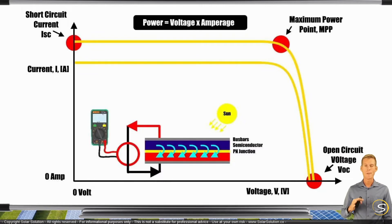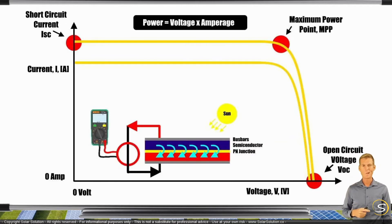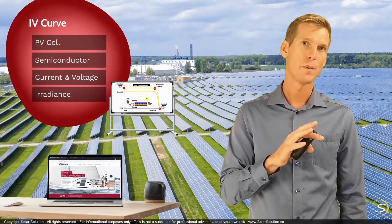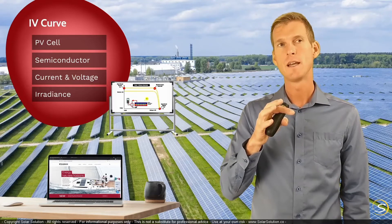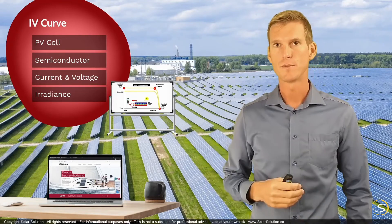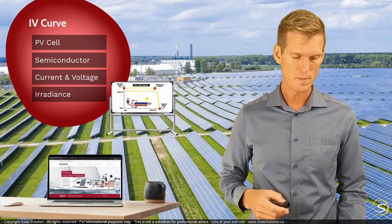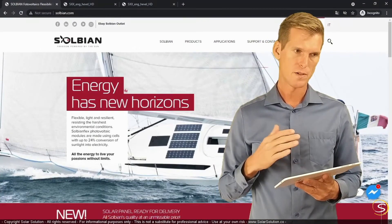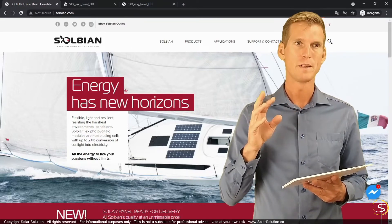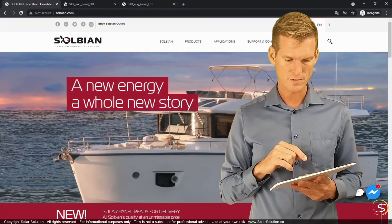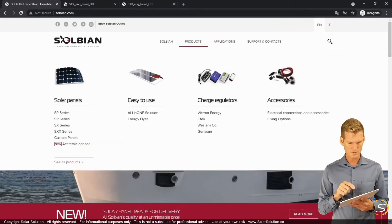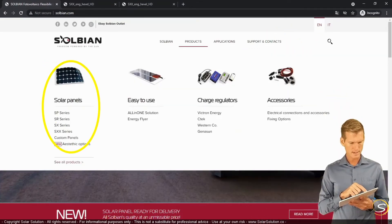That's quite enough theory for now. We'll use this knowledge later as we continue through this chapter. For fun, let's go online and look at a real-life example of a solar panel and its IV curve. We'll go to the website of Solbian — solbian.com. I'm not affiliated with Solbian; I just find their solar panels to be of relatively high quality, especially the flexible ones, which are often used on boats in the marine world. Let's go to products, then solar panels, and select the SXX series, and download the data sheet.